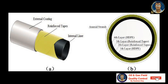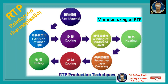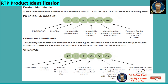Let us have a flowchart for the RTP production technique. First, we need to acquire the raw material, then it goes to the extrusion process of the inner pipe. It will be cooled, then winding of the reinforcement layer, followed by heating, then protective layer covering. Again it goes through cooling, and finally it is rolled into spools. Product identification has a systematic technique or coding system.